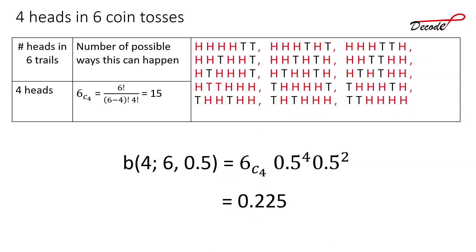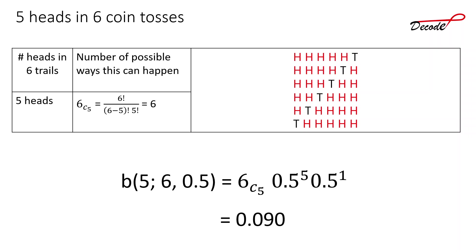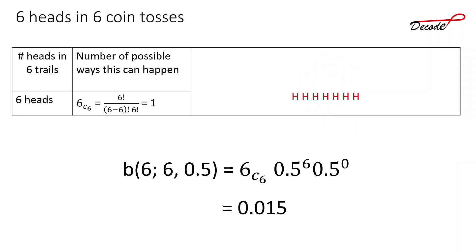For 4 heads in 6 coin tosses, there are 15 possible ways, giving a probability of 0.225. For 5 heads in 6 coin tosses, there are 6 ways, giving a probability of 0.090. For 6 heads in 6 coin tosses, there is only one possible way — getting all heads every toss — so this probability also turns out to be 0.015.